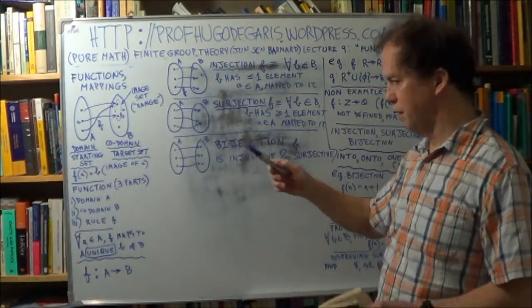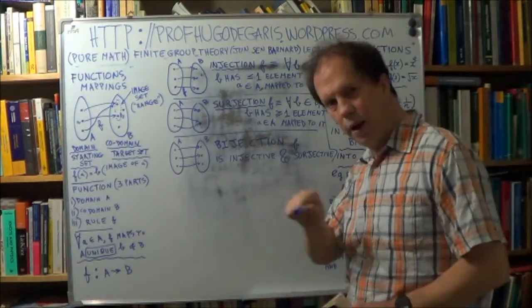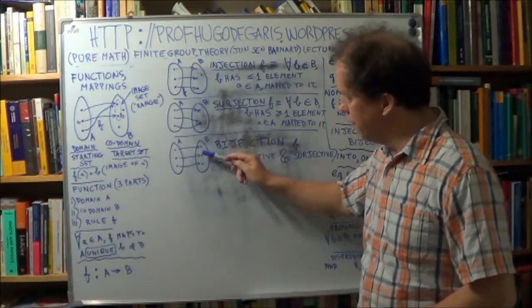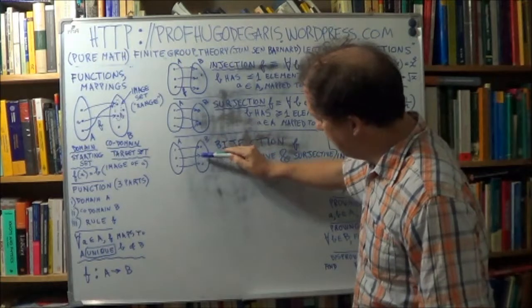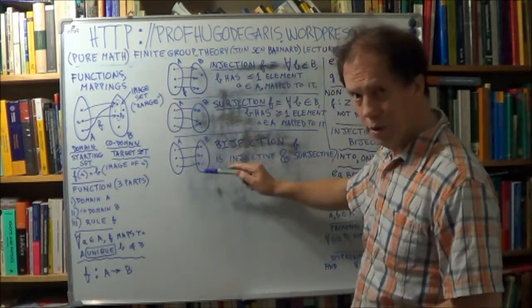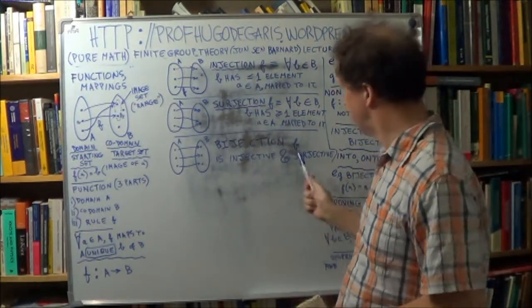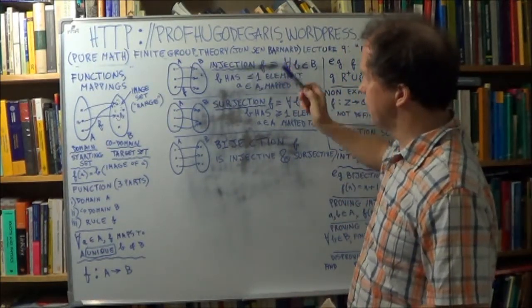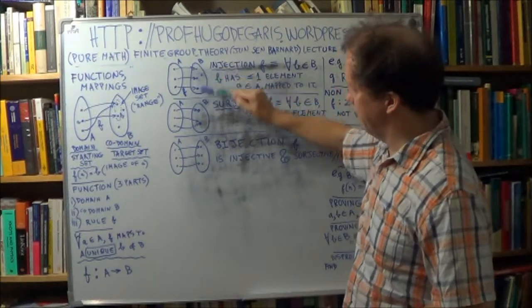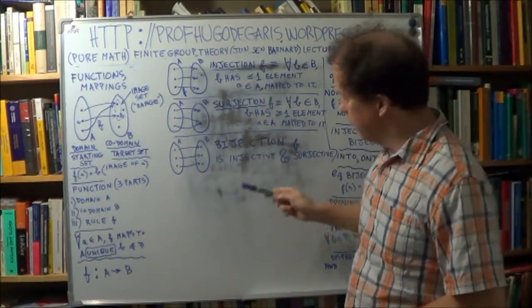So if you see the word bijective, just think one to one. Bijective means it's surjective. So every element here has an arrow to it, at least one. It might have two if it's surjective. But injective means at most one.